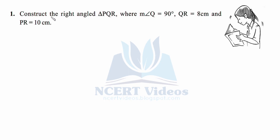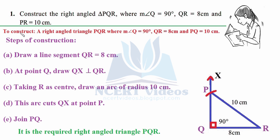Question number one: construct the right-angled triangle PQR where measure of angle Q is 90 degrees, QR measures 8 centimeters, and PR measures 10 centimeters. In this exercise we are going to use the RHS property of congruence of triangles — that is, right angle, hypotenuse, side — where a right angle is given, the hypotenuse length is given, and the length of one of the sides is given.